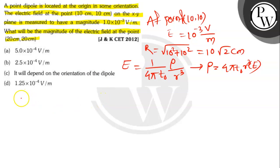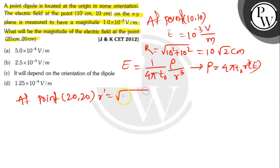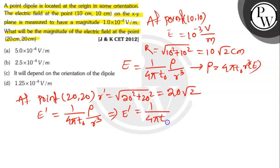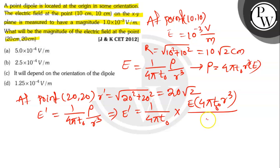The electric field at point (20, 20): R' = √(20² + 20²) = 20√2 cm. So E' = (1/4πε₀)(P/R'³). Substituting P = 4πε₀ R³ E, we get E' = (1/4πε₀) × (4πε₀ R³ E) / R'³, which simplifies to E' = R³ × E / R'³.